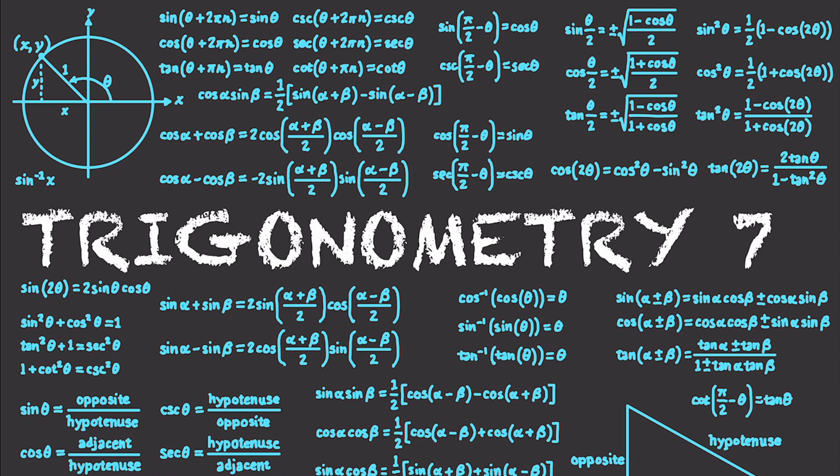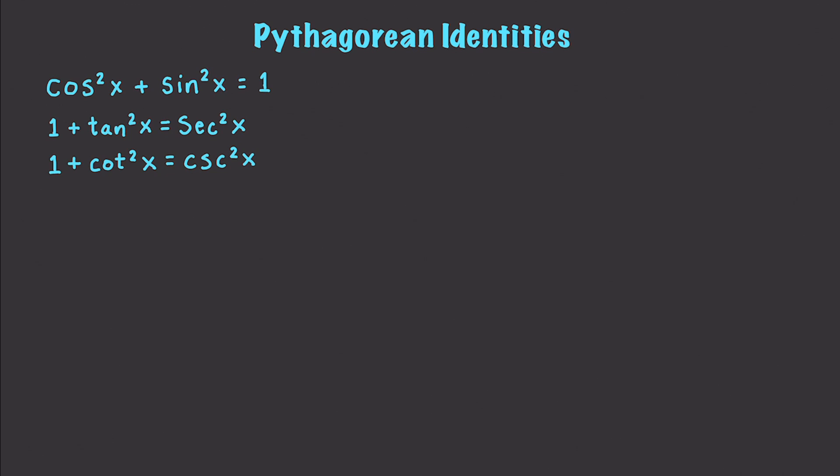Well, hello Internet, and welcome to part 7 of my trigonometry tutorial series. In this part, we're going to continue talking about trig identities, and I'm going to talk about double angle and Pythagorean identities specifically. I have a lot to do, so let's get into it.